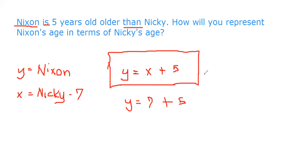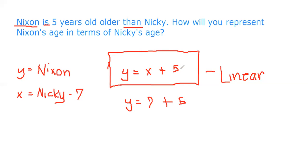So, is this linear or quadratic? This is linear. It's not quadratic because the highest exponent is only one. We don't see a highest exponent of two — all exponents are one. So this is a linear function.